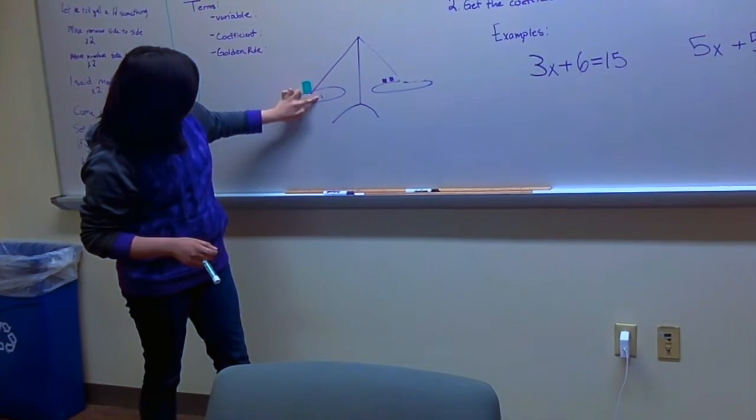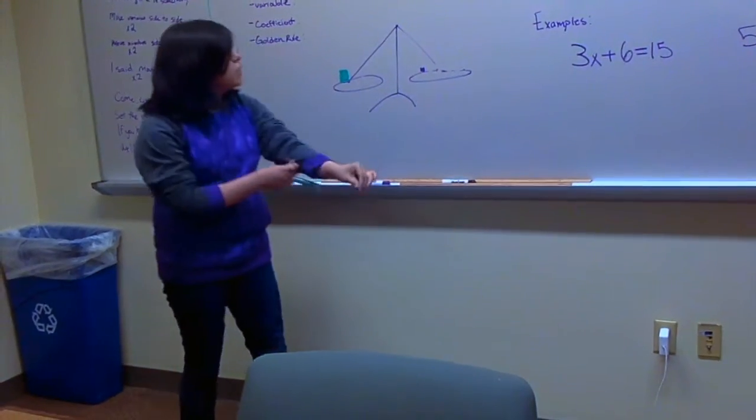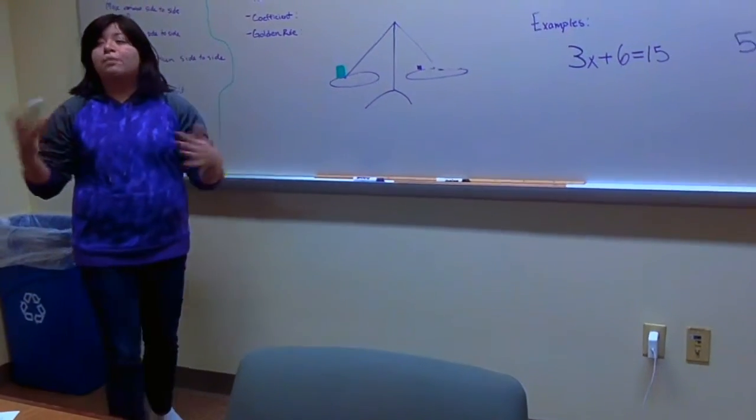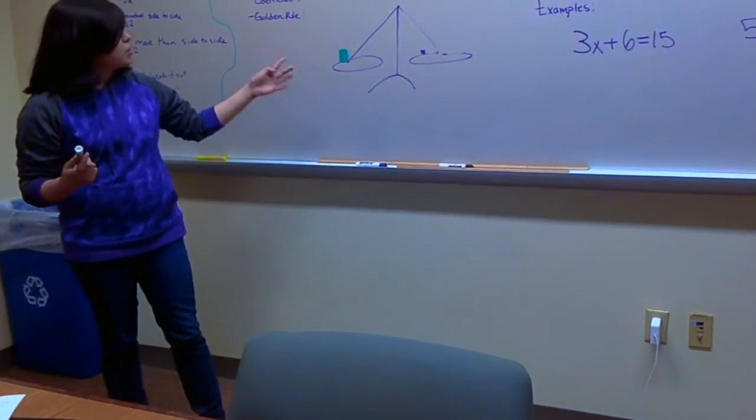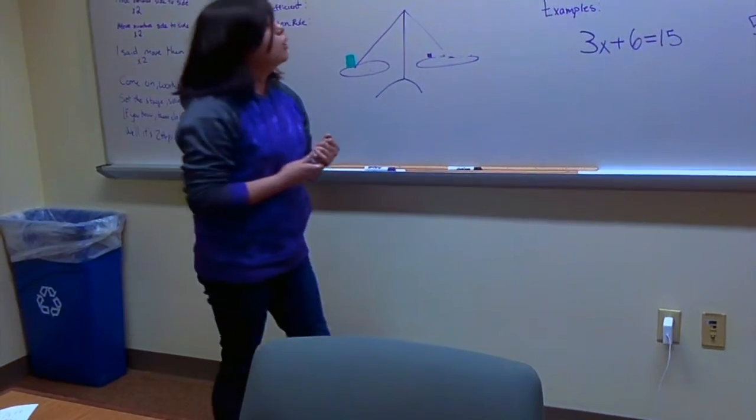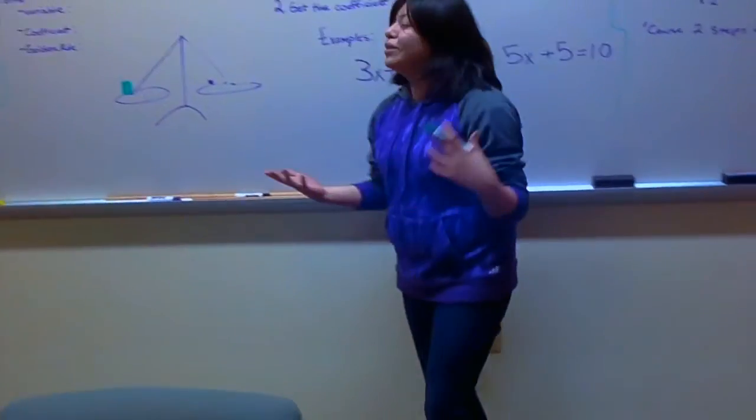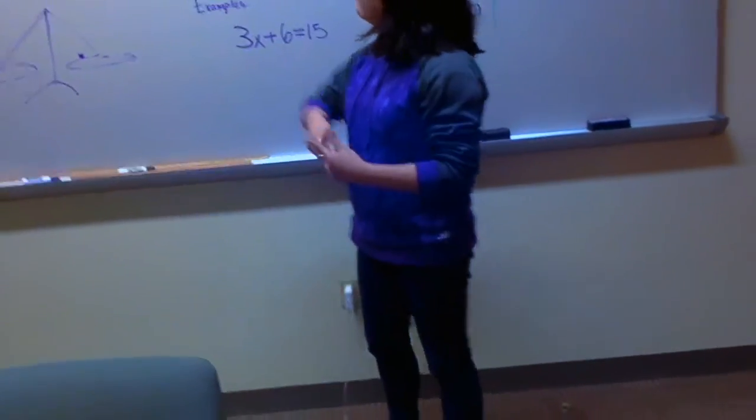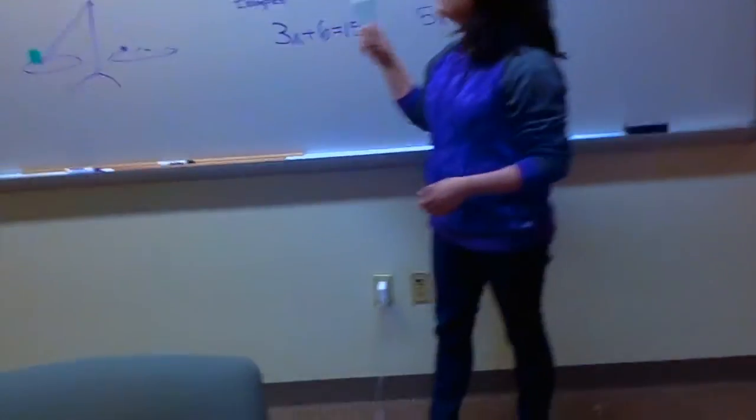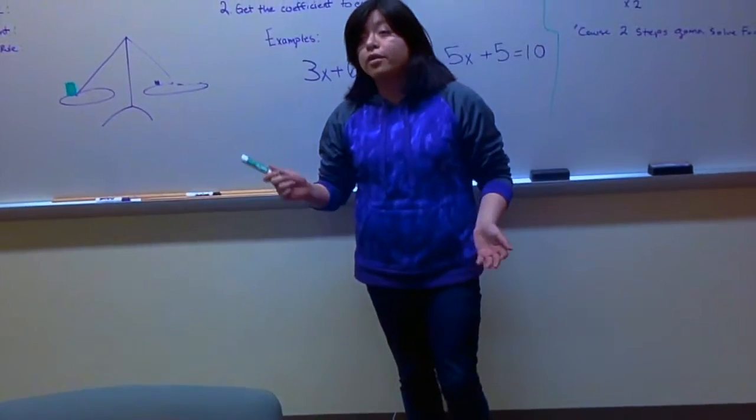And finally, the last couple blocks on the other side, and one more on the other side. So, after keeping this scale balanced, we see that this green block weighs as much as one purple block. Alright? So, there are two steps in the two-step equation in the name. Step one is to get the variable and numbers on different sides. And step two is to get the coefficient to equal one.